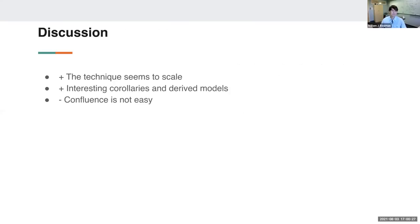This technique seems to scale: I've looked at the rest of a small compiler and have closure conversion, heap allocation, and code generation working. We get nice corollaries, but the main downside is that confluence is not always easy to prove — at least one technique in the literature converts the rewrite system back into a compiler and proves correctness that way instead. Whether this is a better approach is an open question, but it gives us a nice model and interesting corollaries.